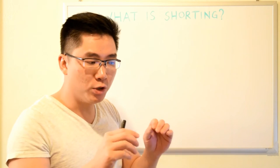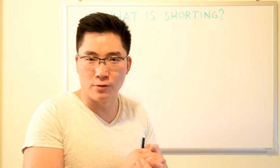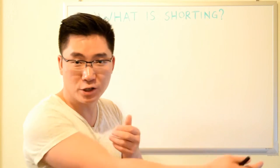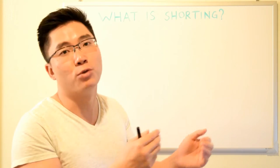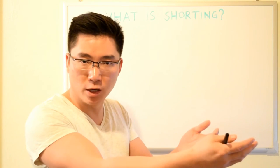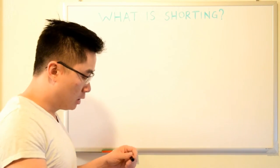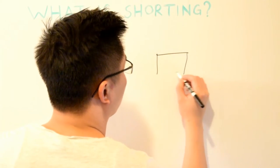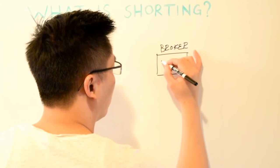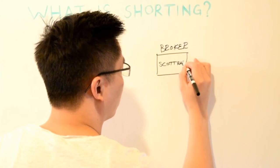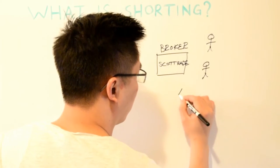Before we go through an example, I want you to understand what happens in the background. Trading is not like going to the farmers market - you need a mediator, and the mediator in trading is the broker. The broker mediates the transaction between buyers and sellers, and that's where commission fees come from. In this case we're going to use Scottrade as our example broker, and there are a lot of traders that trade through Scottrade.